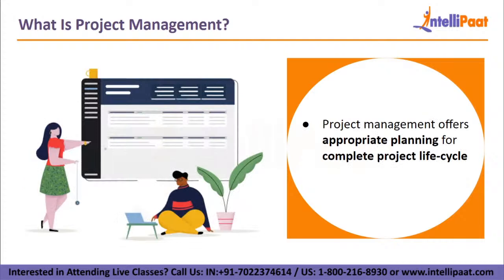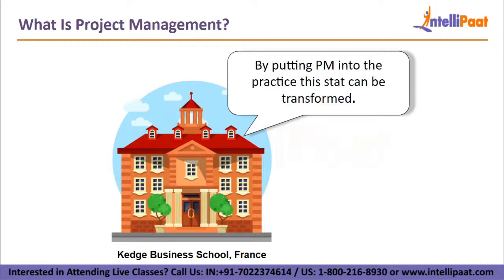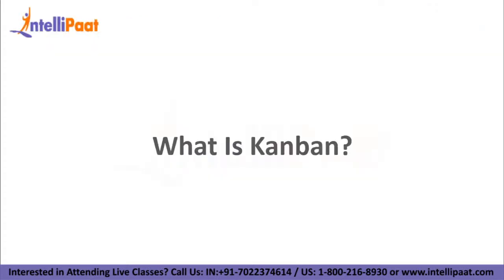Project management offers proper planning of the complete developmental life cycle to get work done before a deadline. As per research done by KJ Business School, 39% of projects fail due to lack of proper planning, and this number can be significantly reduced by using proper project management strategy. It provides both company and clients with accurate information about deliverables, budget, resources, and time. We are going to discover one of those incredible project management software tools: Kanban.